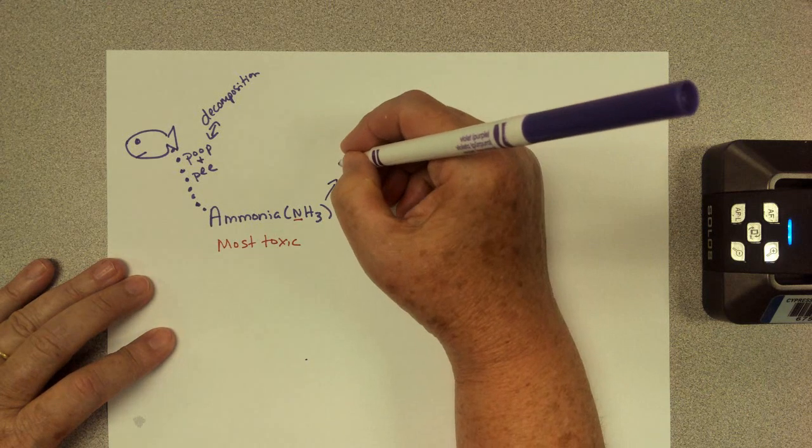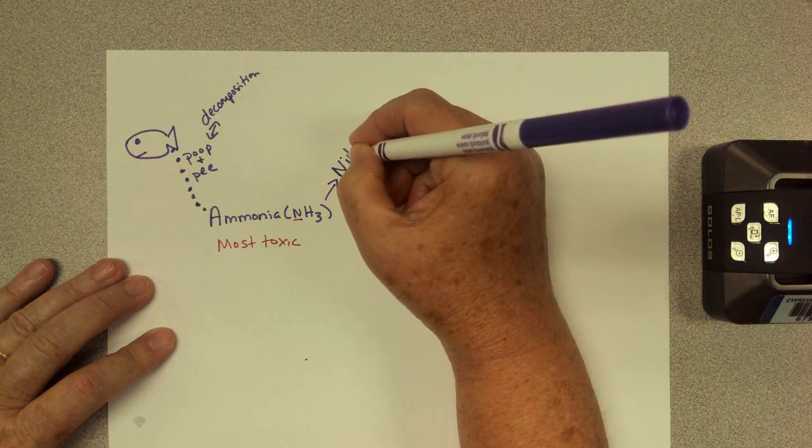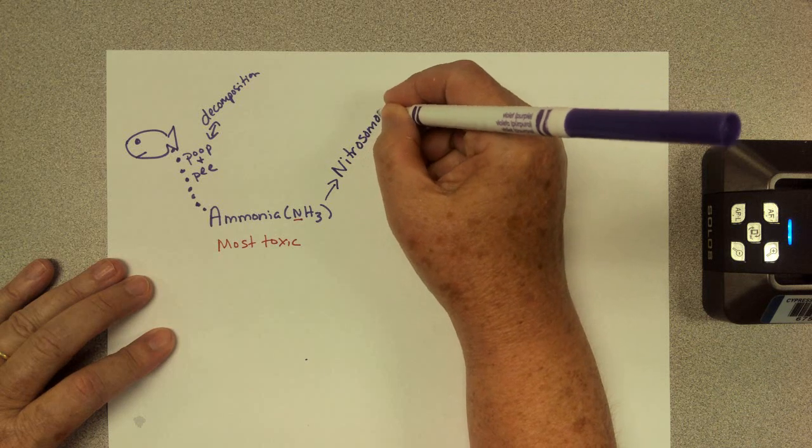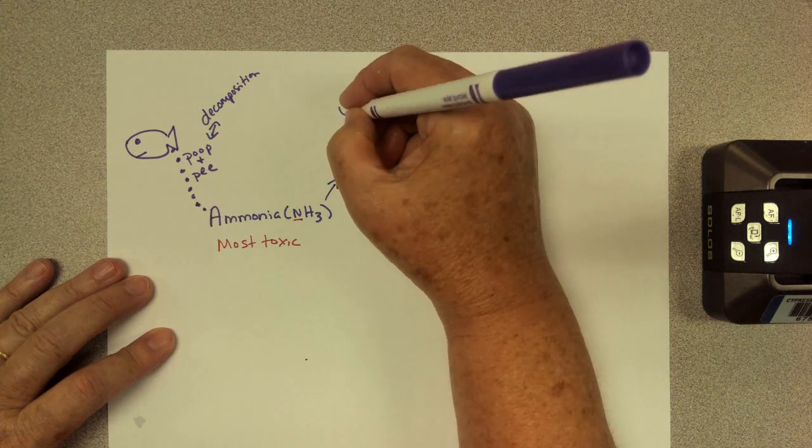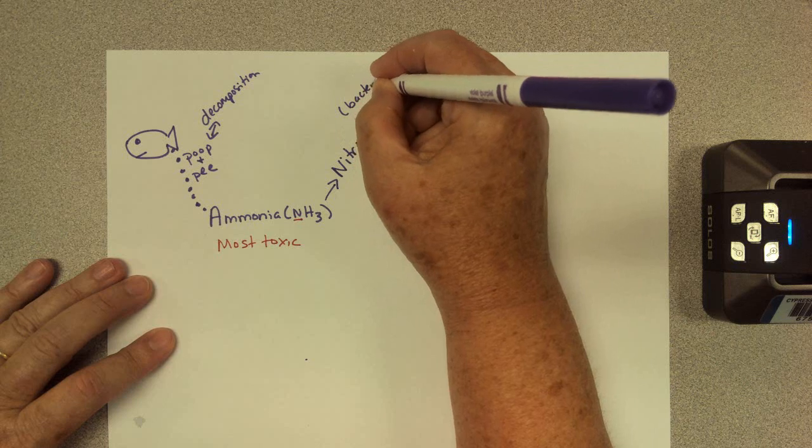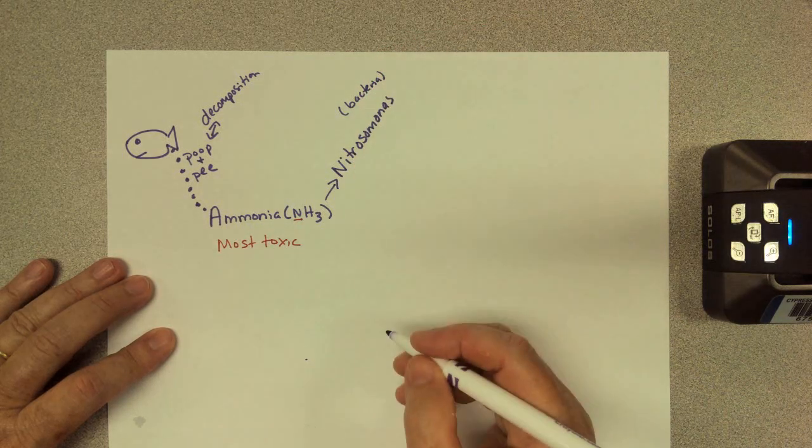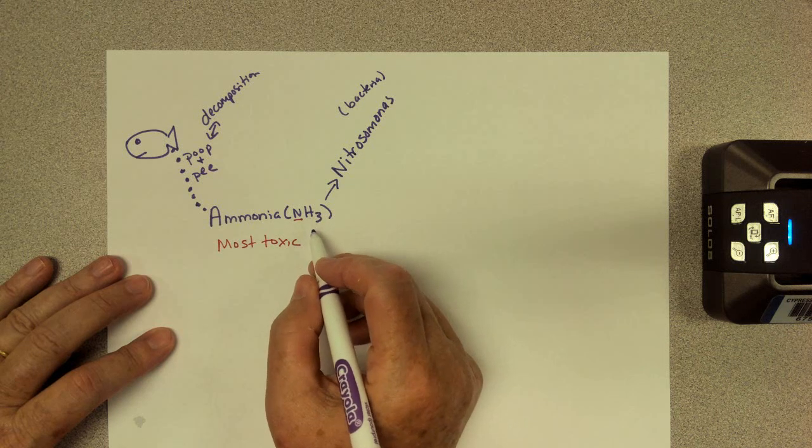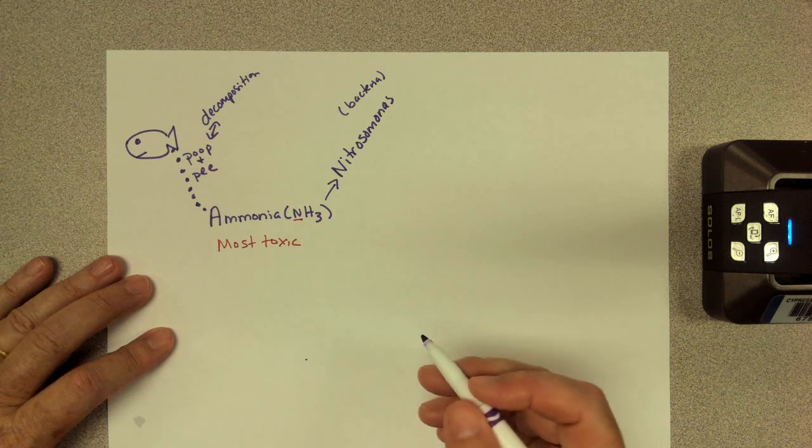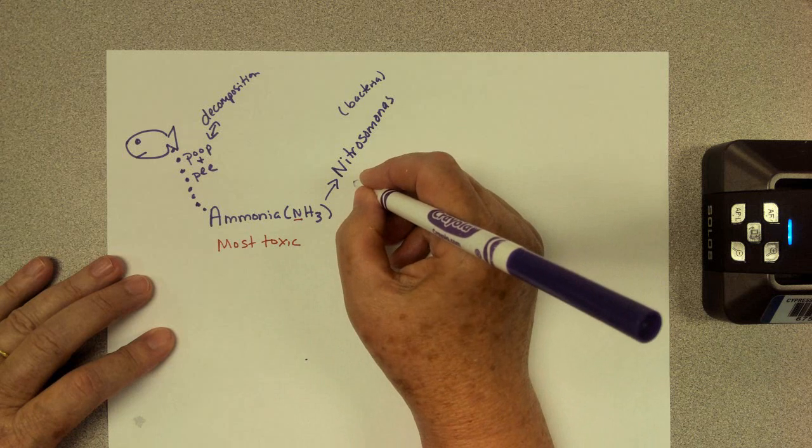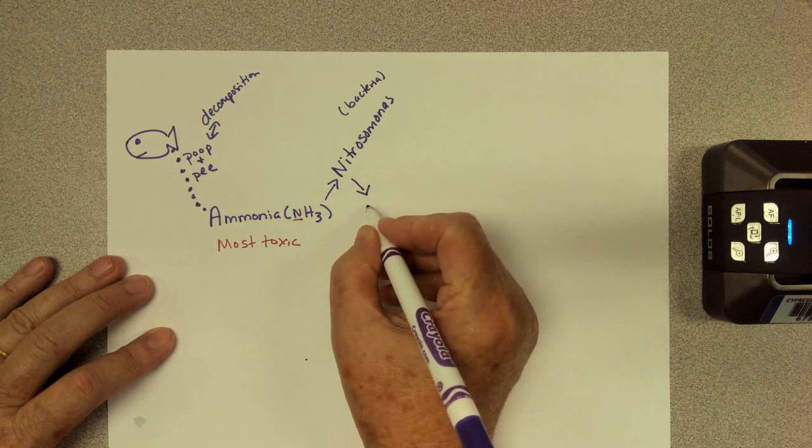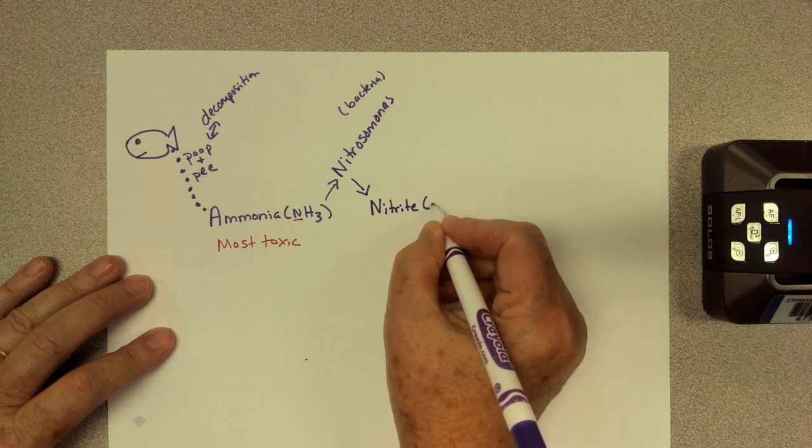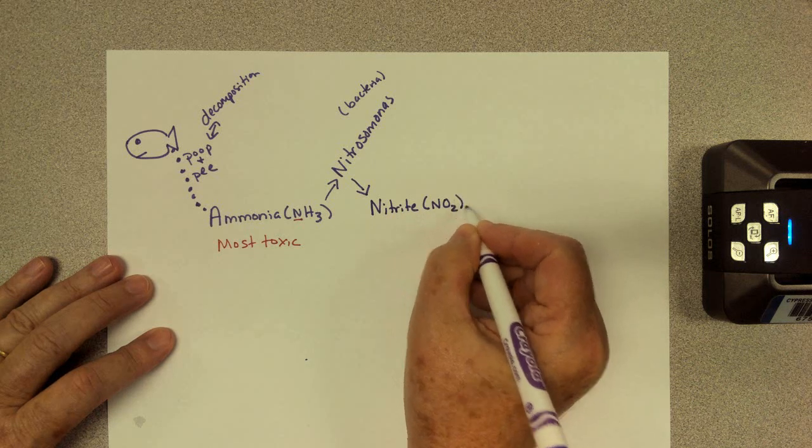We have two bacteria that you've heard of before. Part of your biological filter is nitrosomonas. I'm going to put bacteria up here so you can remember what that is. Nitrosomonas will ingest ammonia. It will use NH3 in its body. And when it's done with what it needs to do with it, it excretes another nitrogen product called nitrite, which is NO2.